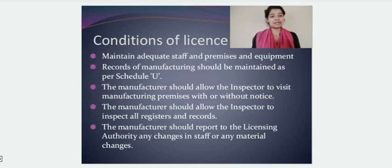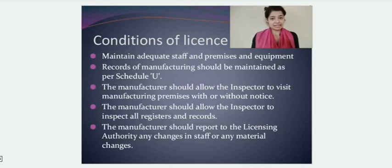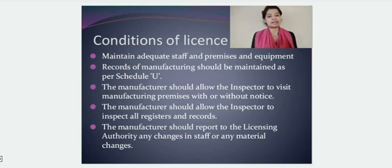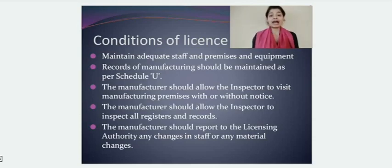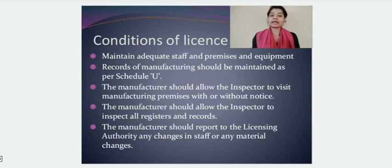Once you are given a license and the manufacturing procedure is to start, there are certain conditions you must maintain. You should have adequate premises and adequate equipment for the manufacturing procedure. The entire record of manufacturing should be recorded and maintained in a proper register as per Schedule U.